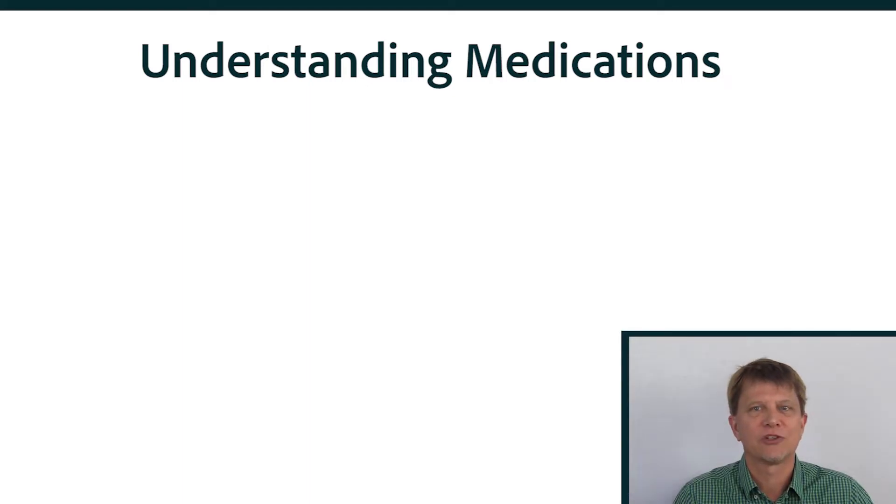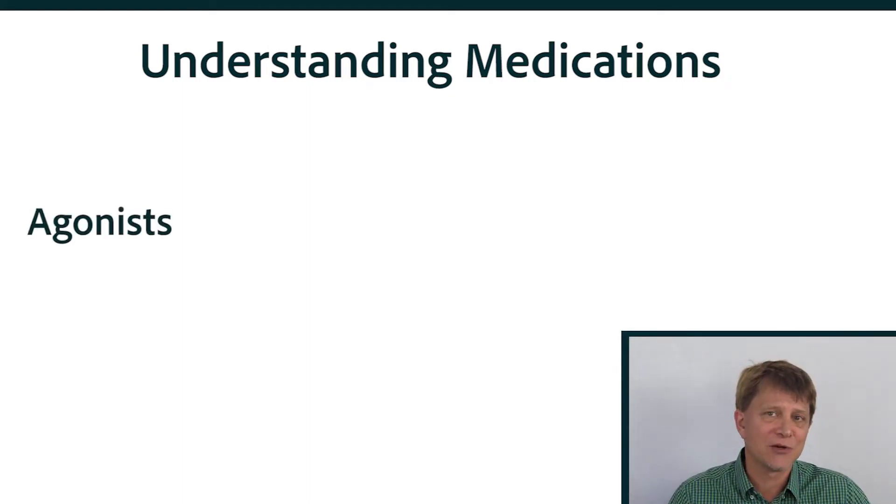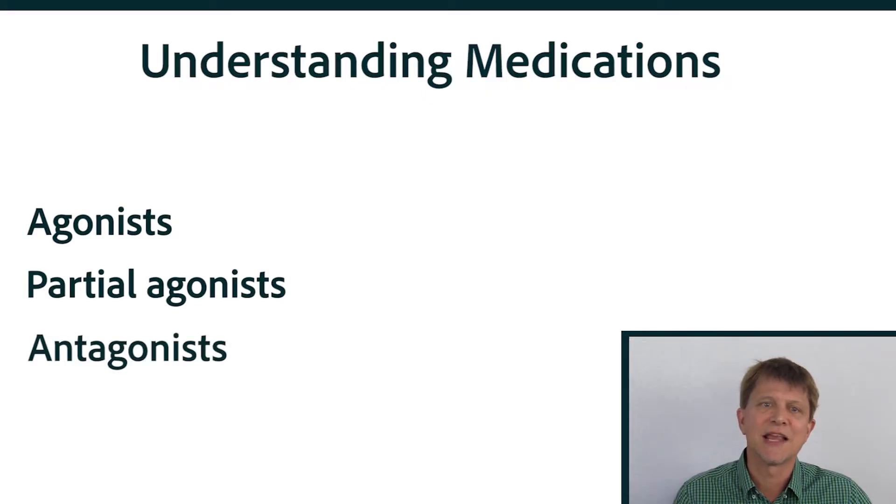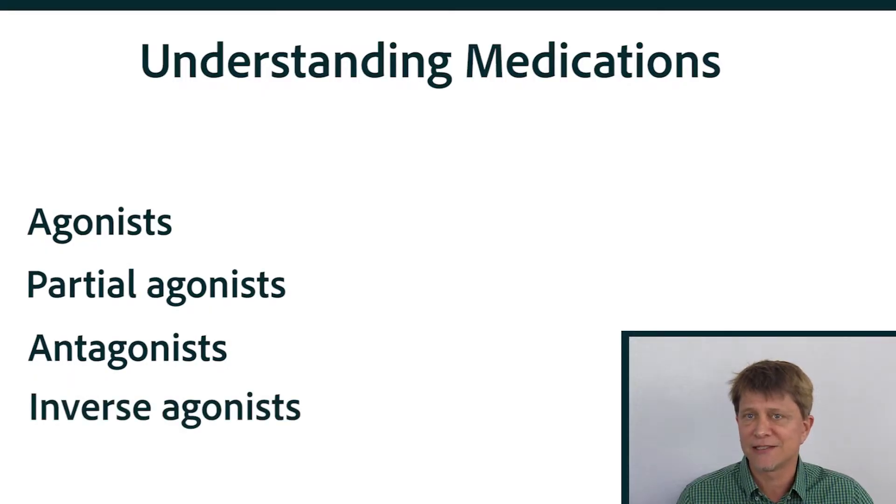In this lesson, we're going to make sure you really understand what an agonist is, because we'll be talking about agonists throughout this chapter. We'll also compare that to what else can happen at that receptor: partial agonists, antagonists, and inverse agonists.